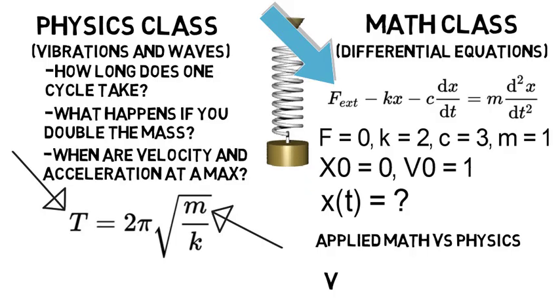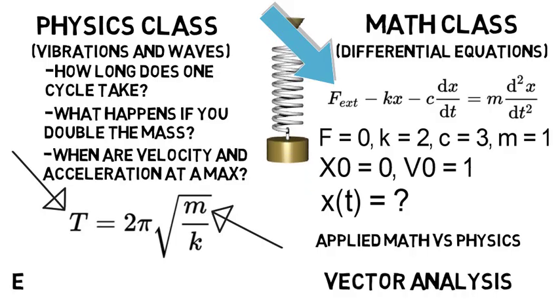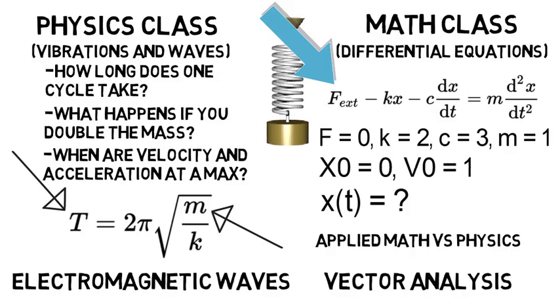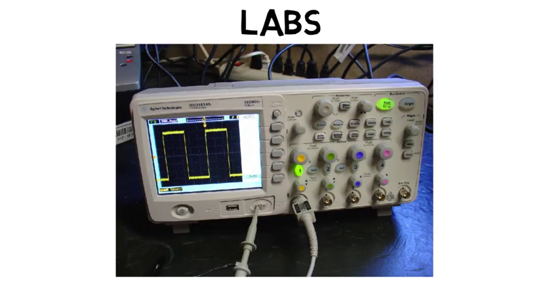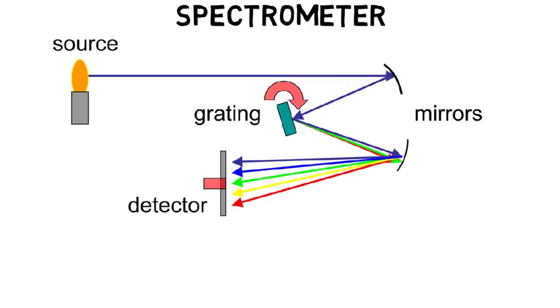And this is similar to comparing a vector analysis class to an electromagnetic waves class. As a physics major, also be prepared for labs, whereas in math you won't really see much, if any. As a physics major, you'll learn about equipment that reads electric signals. You'll learn what a spectrometer is, and how we can use it to study the spectrum of light coming in from a source.